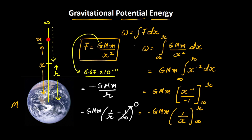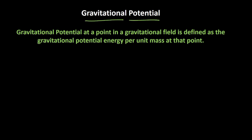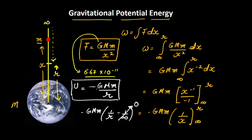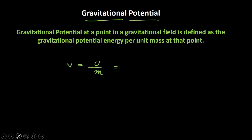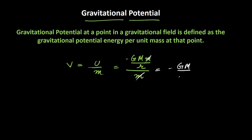So this is the expression for the work done, which can be written as the gravitational potential energy. Now that we have an expression for gravitational potential energy, we use the basic definition: gravitational potential equals gravitational potential energy divided by mass. The gravitational potential energy is minus GMm by R, so V equals minus GMm divided by R, divided by m. The m and m cancel, so it simply becomes minus GM divided by R.